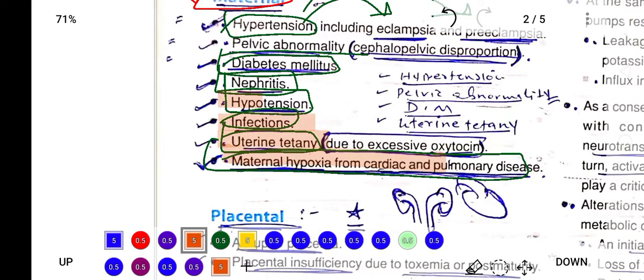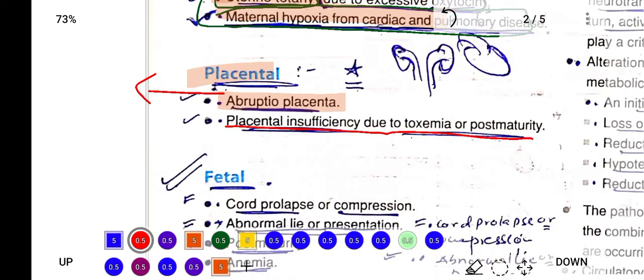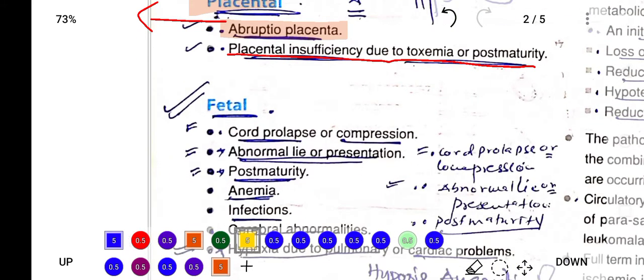These are causes of birth asphyxia due to maternal dysfunction. Placental causes are abruptio placentae, which means premature separation of the placenta, placental insufficiency, toxemia, and post-maturity.